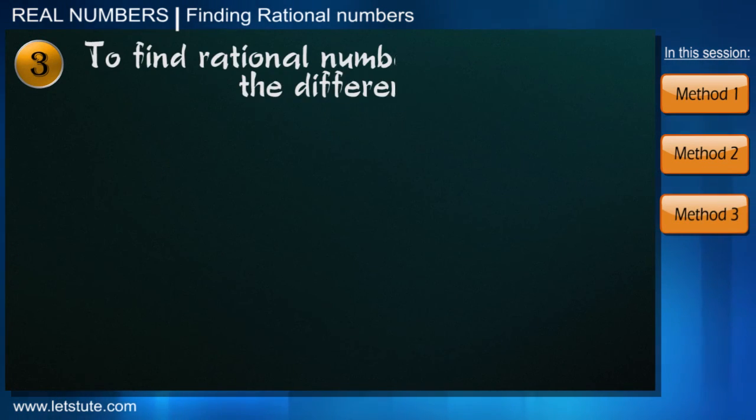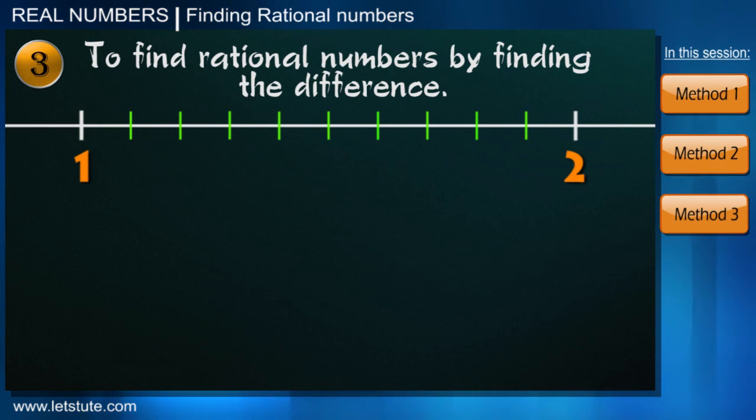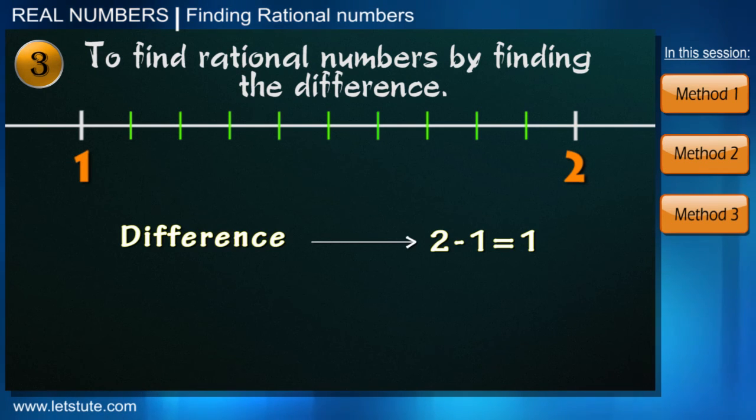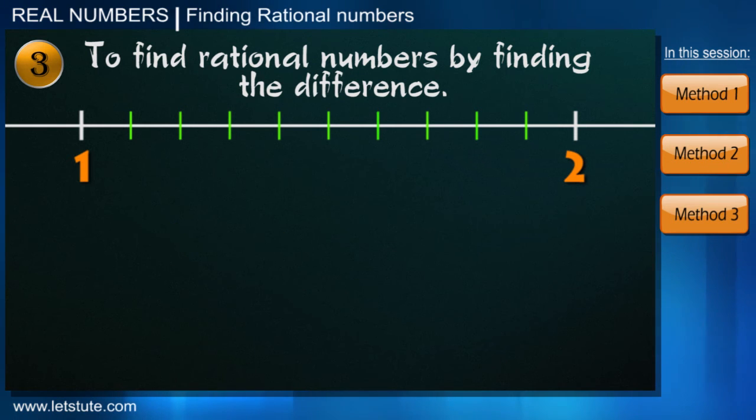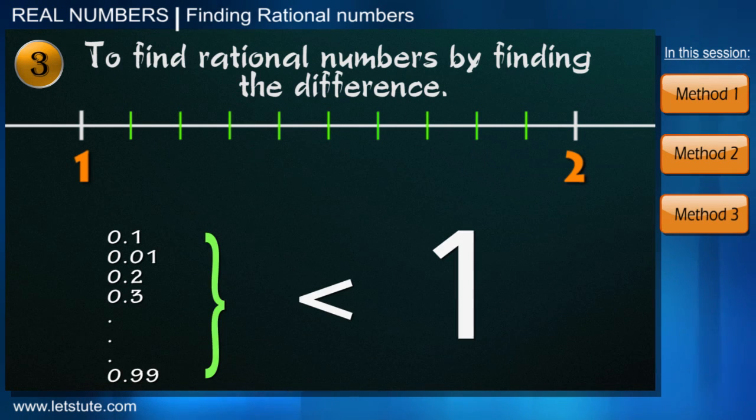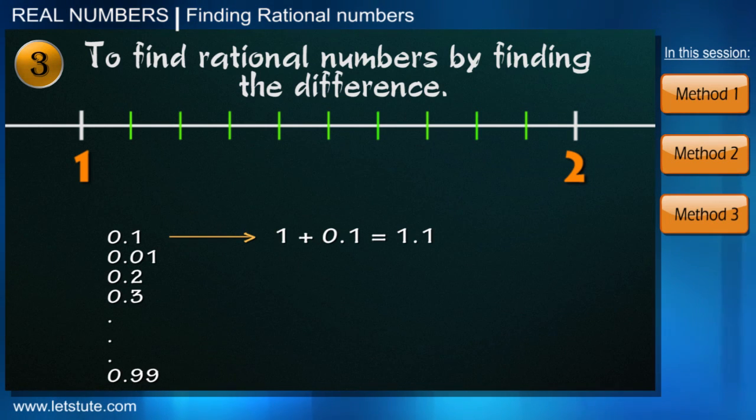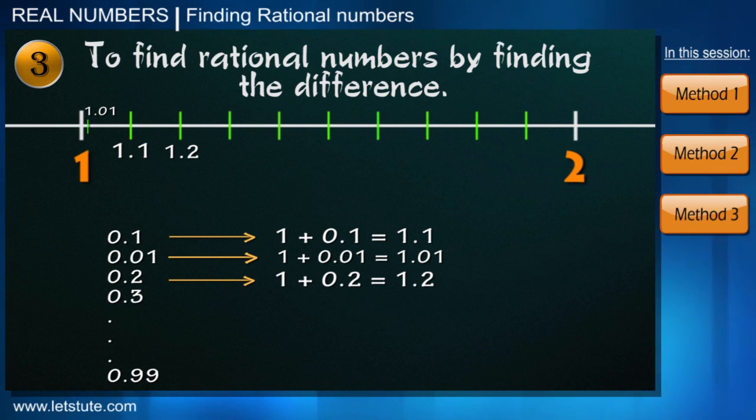Friends, for integers we have one more easy way. So let's take the integers 1 and 2. Here we'll first find the difference between 1 and 2 which is 1. And we know that adding 1 to 1 we can directly get 2. This means that if we add all the numbers which are less than 1 to 1, then those numbers would lie between 1 and 2. Let's say for example the numbers 0.1, 0.01, 0.2, 0.3, and up to 0.99, they are all less than 1. Therefore we say that the numbers 1 plus 0.1, that is 1.1, lies between 1 and 2. Same way 1 plus 0.2, that is 1.2, 1.3, 1.4, they all lie between 1 and 2.